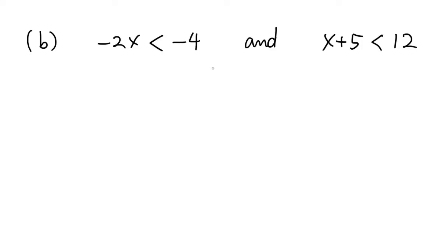Here is the second example. We have inequalities connected with AND. For this type of inequality, a solution must be a number satisfying both inequalities. If it satisfies just one of them, it is not a solution.